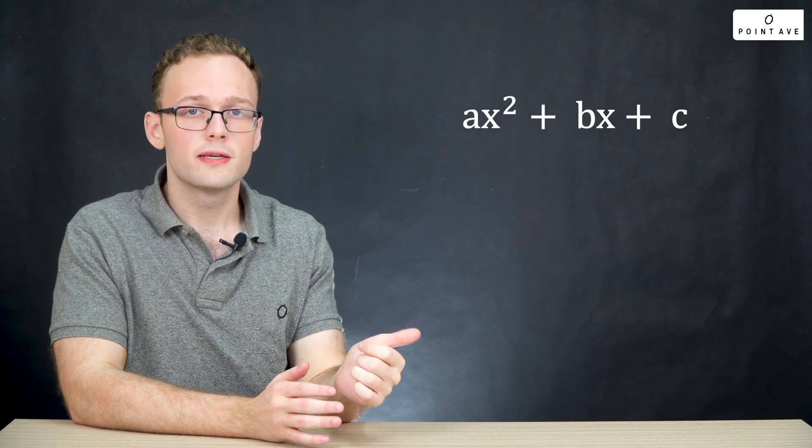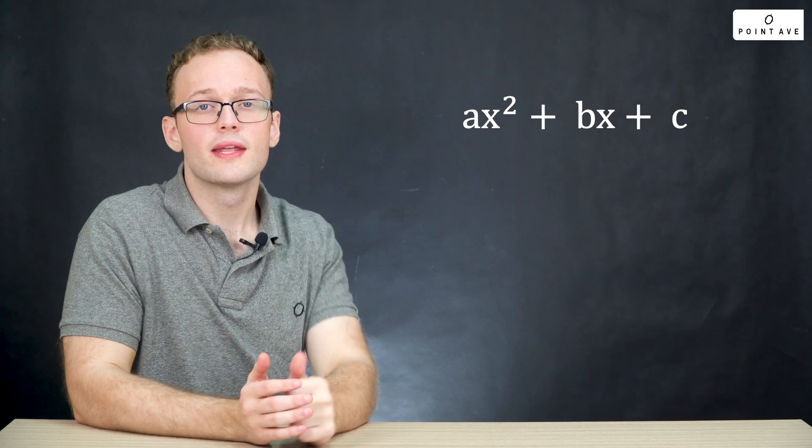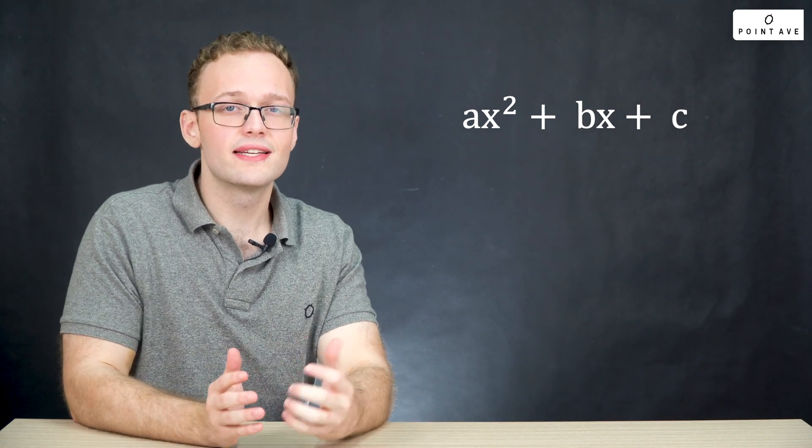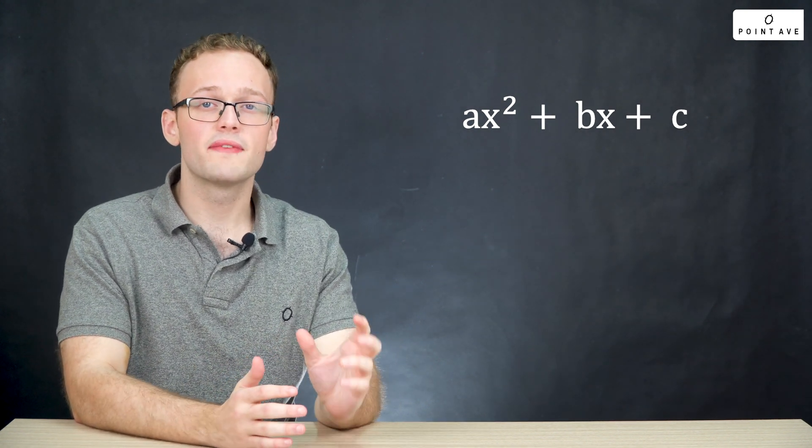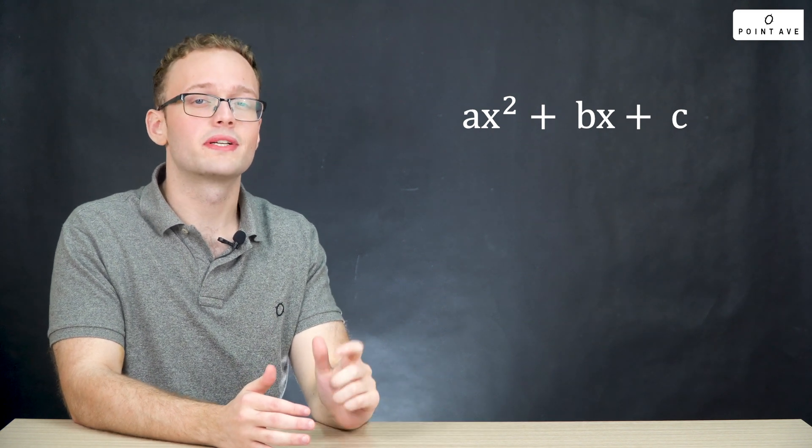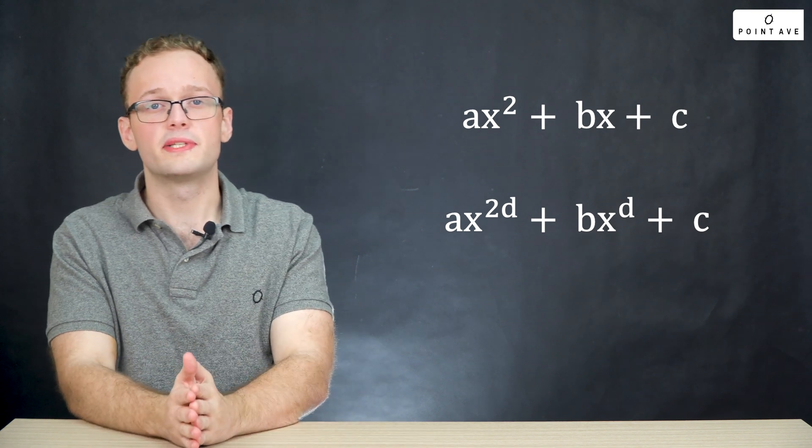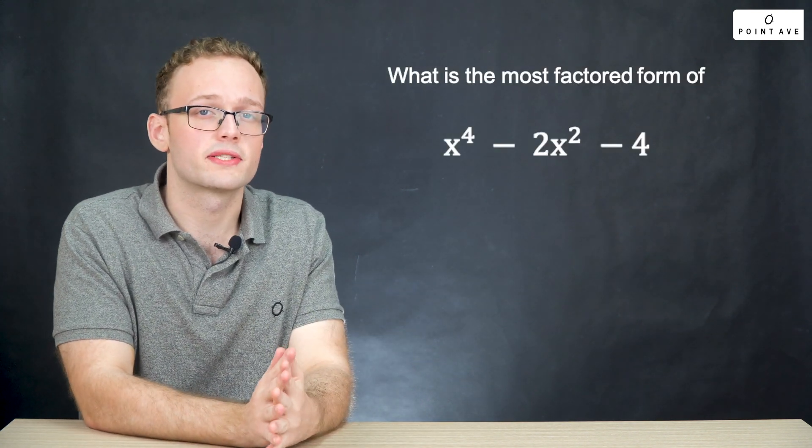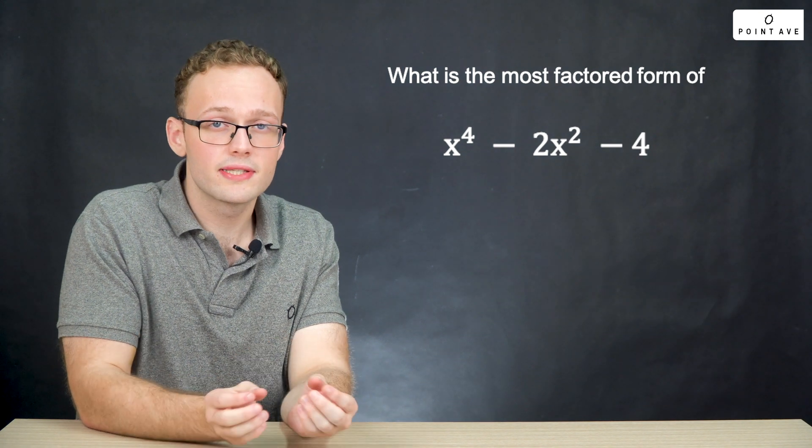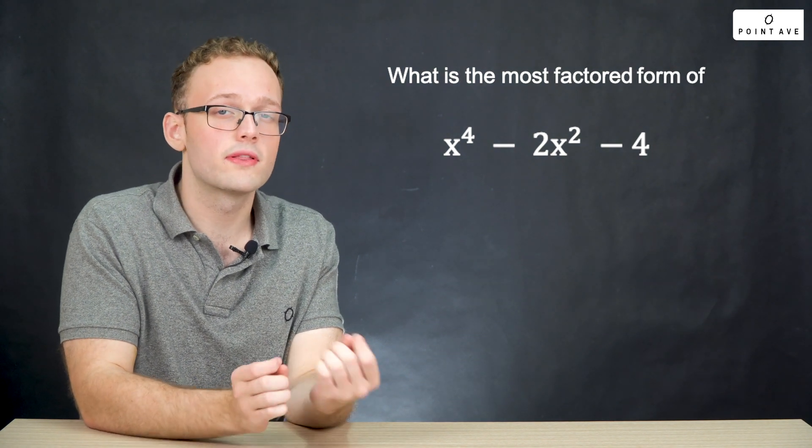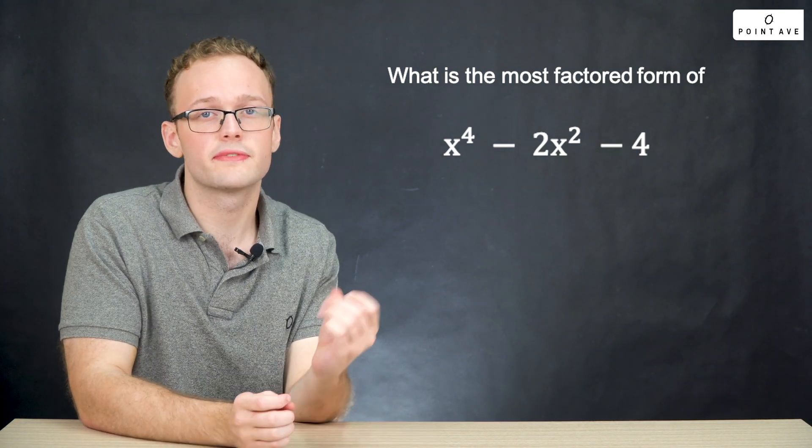Another interesting generalization can be made to the quadratic factoring we learned earlier. We said before that quadratic factoring applies to any expression with ax squared plus bx plus c, but actually it applies to any expression where the exponent of the first x term is twice the exponent of the second x term. Let's apply this to an example. This question asks us to factor this big expression here.